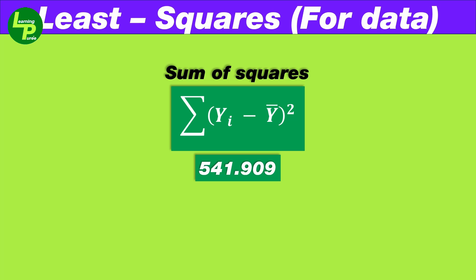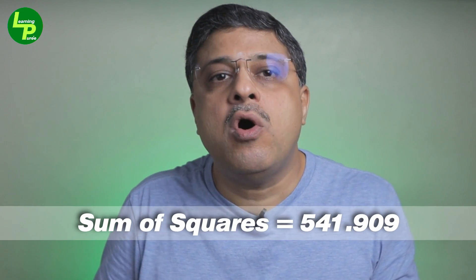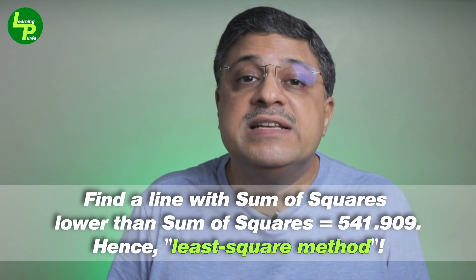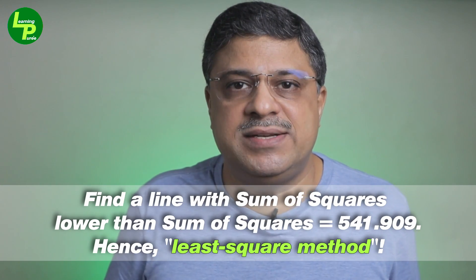We call this figure the sum of squares which is 541.909. Further, we see that this arithmetic is akin to calculating the variance of the data and hence, we can also call this the variation of the data points from their arithmetic mean. We will use this first sum of squares as a good point of comparison for all the variations that we will compute for all the different lines. We do this since this is the only baseline with which we can evaluate the performance of other lines. The objective will be to find a line with a variation of sum of squares that is lower than this baseline. Note that this is not the only objective. However, as a starting point, this will serve as a good estimate.